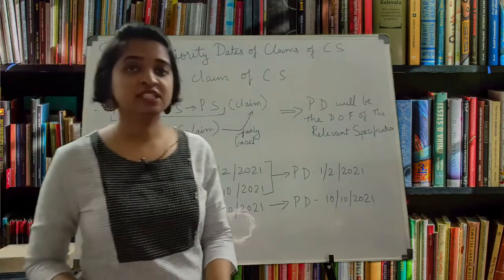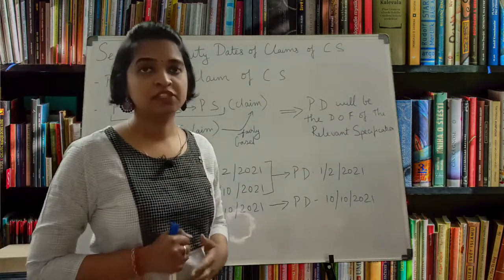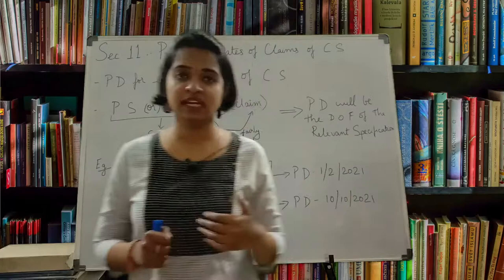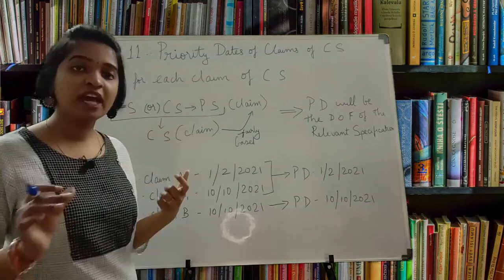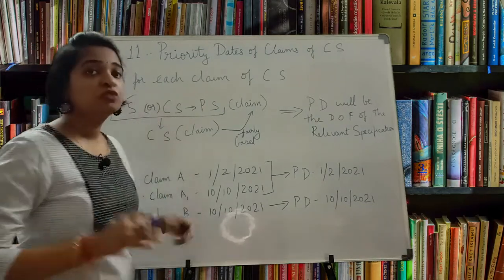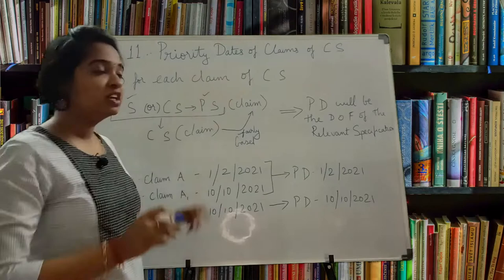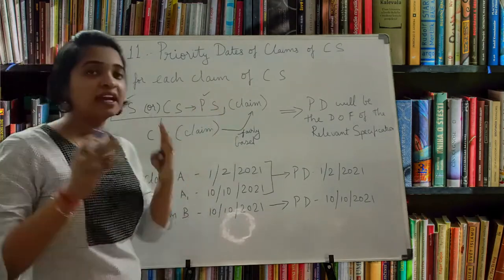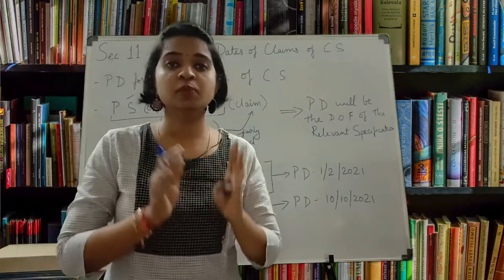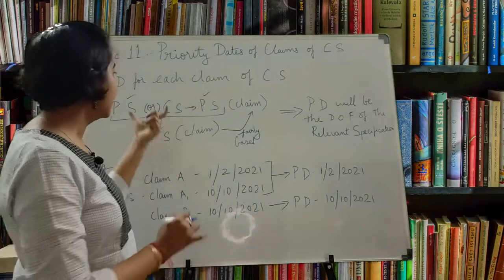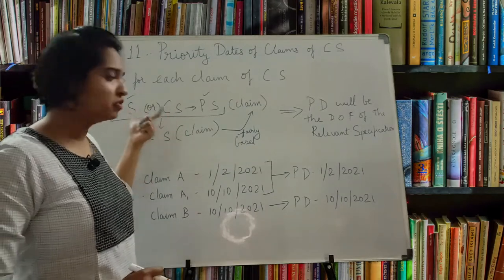As mentioned in the previous section, there is a priority date for each claim of complete specification. Now, consider the scenario where you are filing a provisional specification - either you are directly filing a provisional specification, or you filed a complete specification and later changed it into a provisional specification. After provisional specification, you all know that you have to file a complete specification.